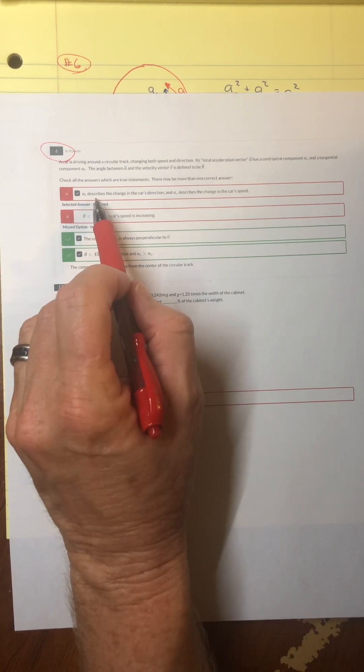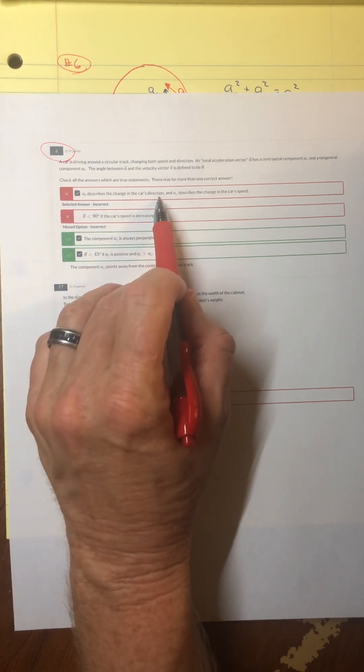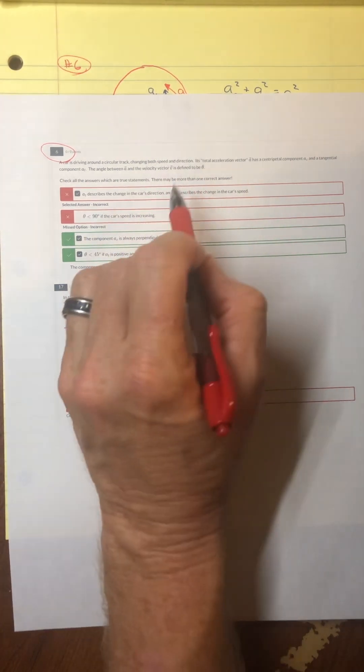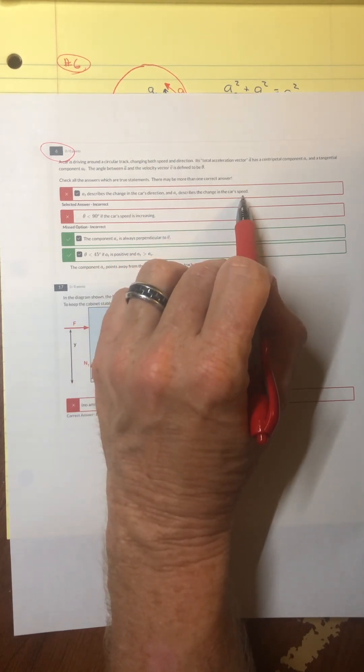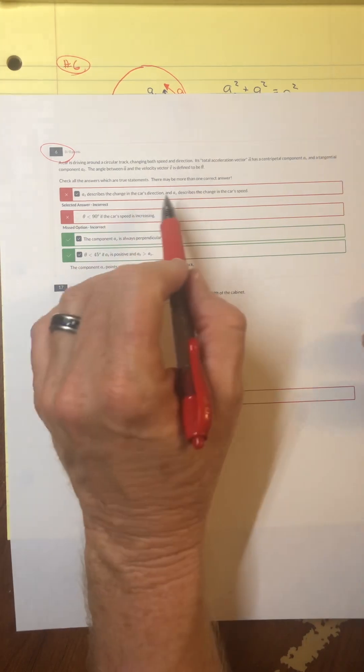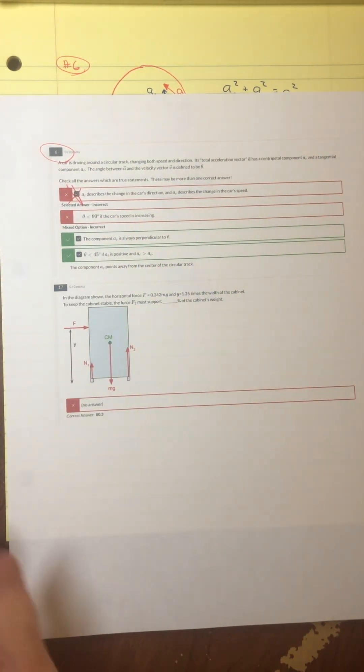So the tangential describes the change in the speed's direction. No. Tangential does speed. And centripetal describes the change in the car's speed. No. These are exactly backwards. So don't check that one.